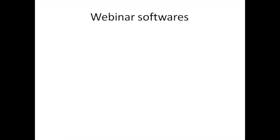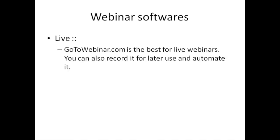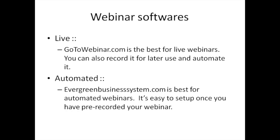Let me give you an overview of some webinar software options. If you're going to do a live webinar, I recommend GoToWebinar.com — it's the best for live webinars and you can also record it for later automated use. If you go the automated route, a software called Evergreen Business System is the best for automated webinars. I personally like it because it actually looks like a live webinar and it's very easy to set up once you have a pre-recorded webinar.